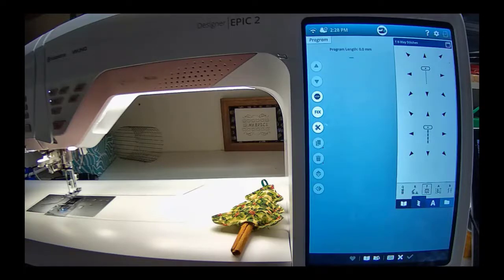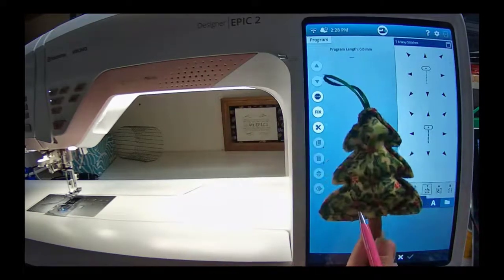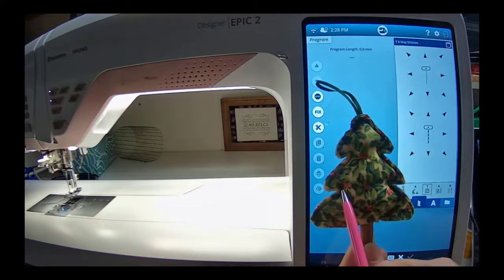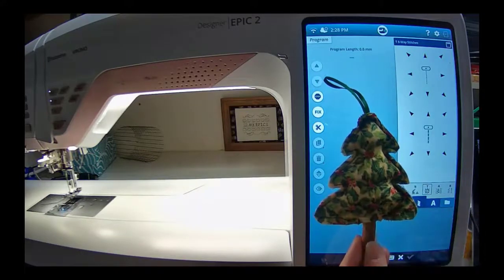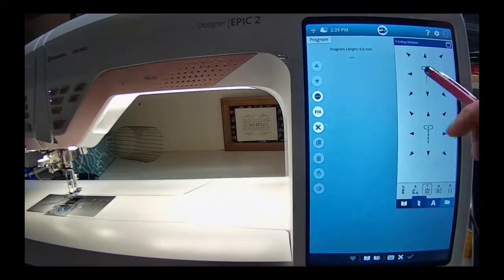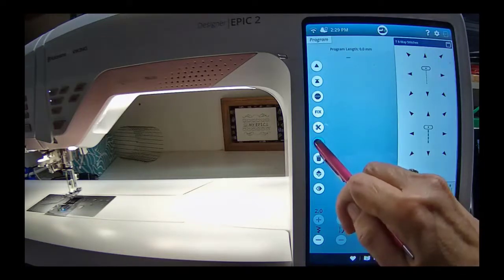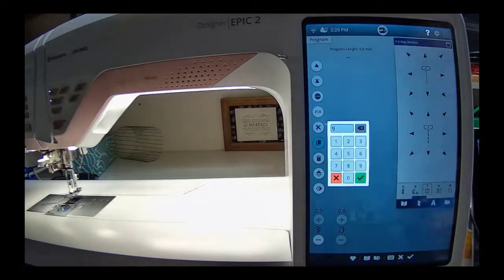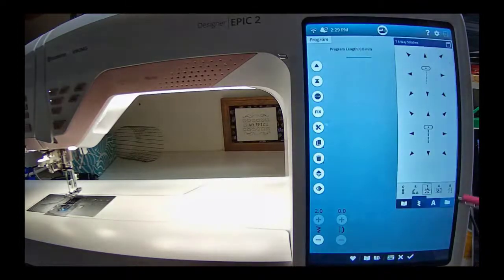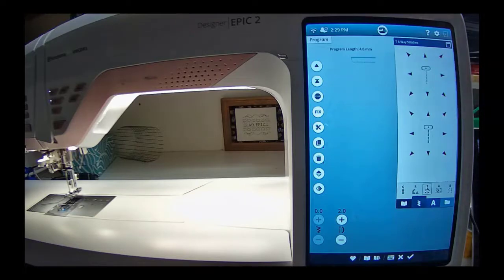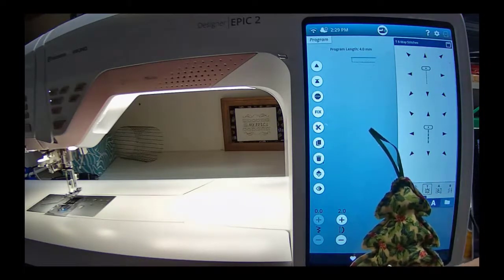The first thing we're going to do is we're going to create some stitches that are going to go across the bottom of the tree. Then we're going to create some stitches going up, and then over to the right, and then up, and then over to the left. So, the first thing we're going to do is we're going to select the arrow going to the left, and that's going to put one stitch on our screen, but I need 10 of them. I'm going to hold down Duplicate, and I'm going to put in 9. So, now I want to go up 2, and that's so that I don't have a really tight point down here on the end.